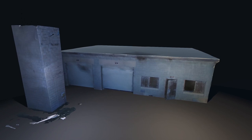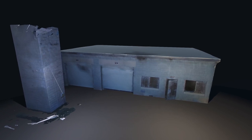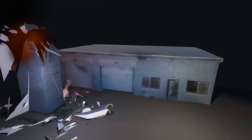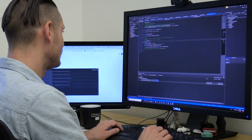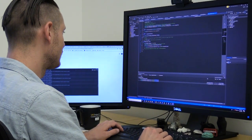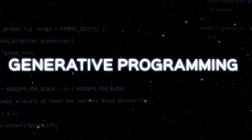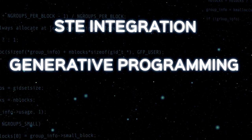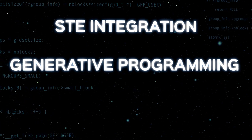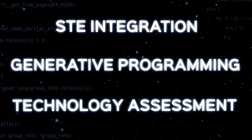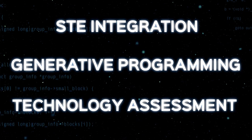Researchers, programmers, and engineers from STE S&T are currently prototyping the TSS architecture, and their approach is made up of three essential pieces: generative programming, the integration of existing STE components, and the assessment of current technologies.